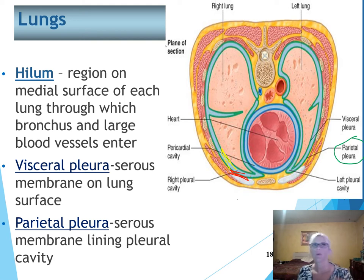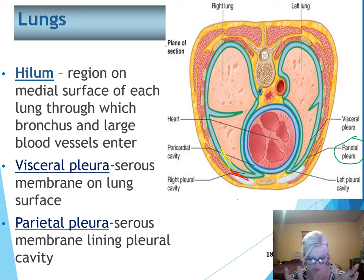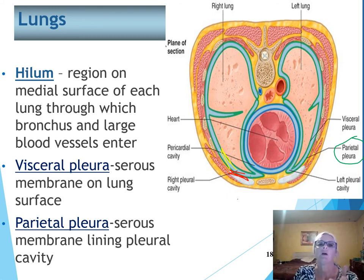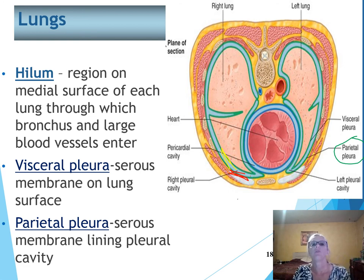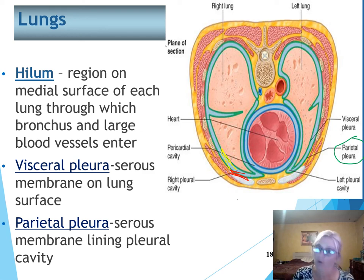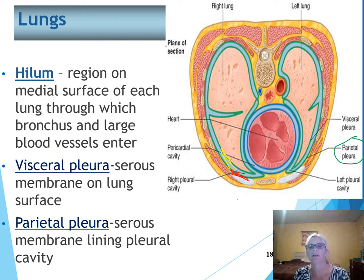If you have ever had pleurisy, you know that serous fluid is important because every breath when you breathe with pleurisy is painful, and if it's bad enough it hurts even when you're not breathing. As the rib cage expands, the parietal pleura takes the visceral along with it, which helps the lungs expand. That's why with pleurisy — the irritation of the pleura — taking in a breath hurts so much, because you're actually moving the membranes that are irritated.